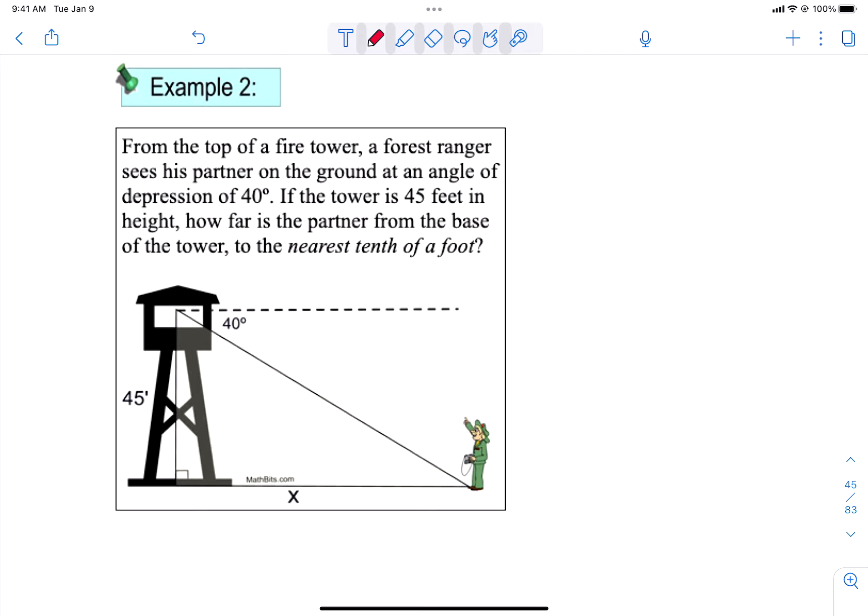So there's example one. Let's take a look at example two. Example two is an example of an angle of depression. It says from the top of a fire tower, a forest ranger sees his partner on the ground at an angle of depression of 40 degrees. If the tower is 45 feet in height, how far is the partner from the base of the tower to the nearest foot? So you will notice that they have labeled everything for us. The tower is 45 feet.